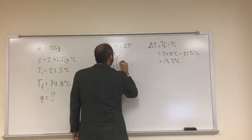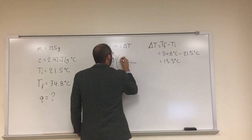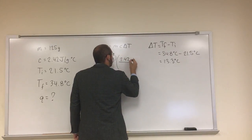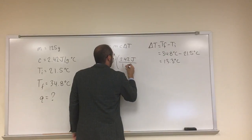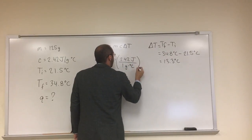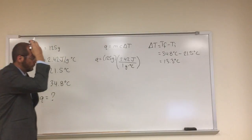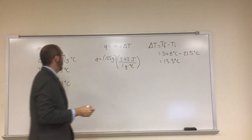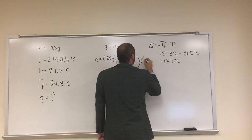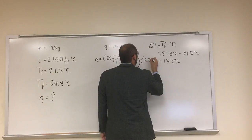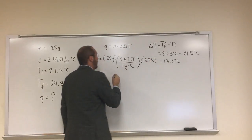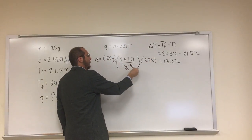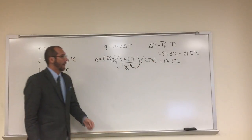And C, this is where I was talking about, so 2.42 joules on the top and 1 gram degrees C on the bottom. And then finally delta T, which we figured out earlier, 13.3 degrees C. And hopefully you can see the units would cancel.